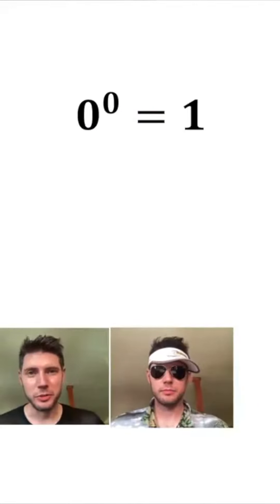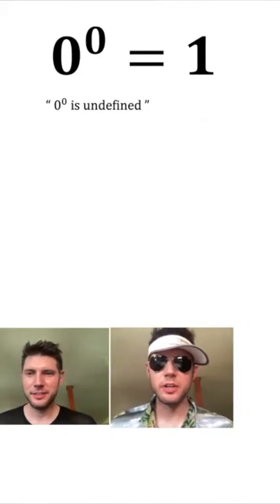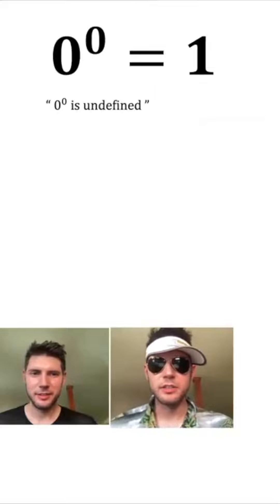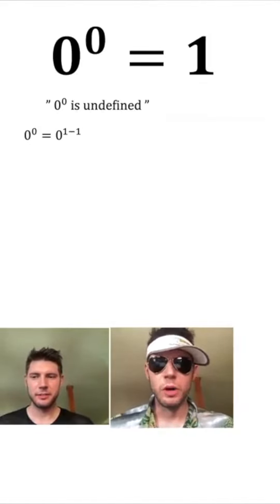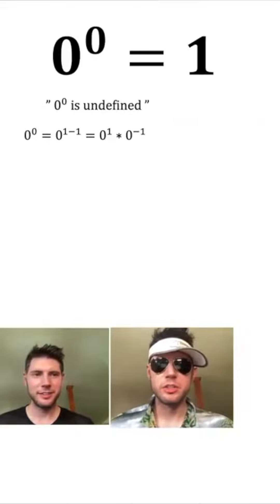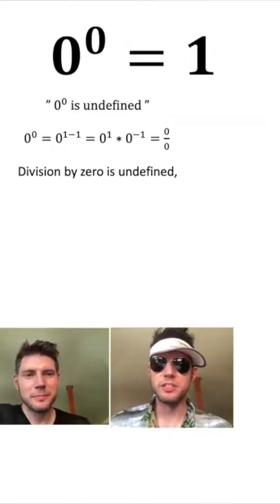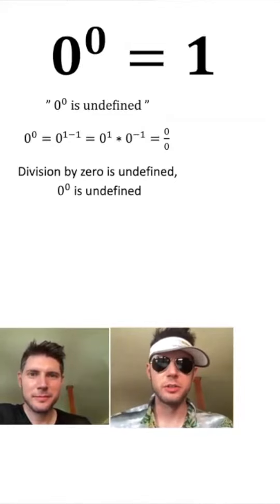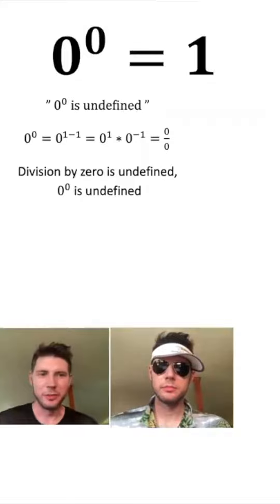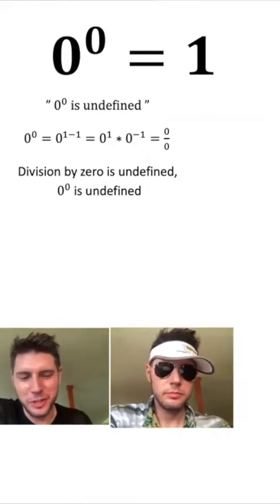Hey, do you want to talk about 0 to the 0 and why it equals 1? No — 0 to the 0 is undefined. 0 to the 0 equals 0 to the power of (1 minus 1), which equals 0 to the 1 times 0 to the negative 1, which equals 0 over 0. Division by 0 is undefined, therefore 0 to the 0 is undefined. That was a fun demonstration — but now I have a follow-up question.